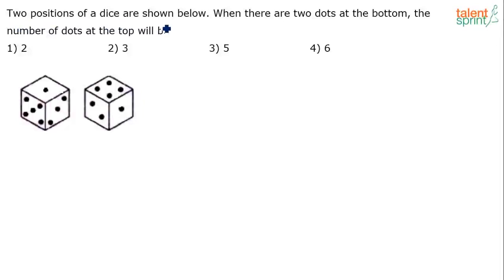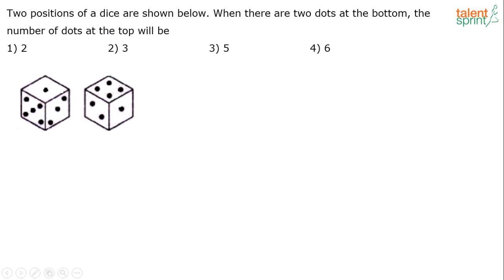Two positions of a dice are shown below. When there are two dots at the bottom, the number of dots at the top will be — now, don't try to use a shortcut.